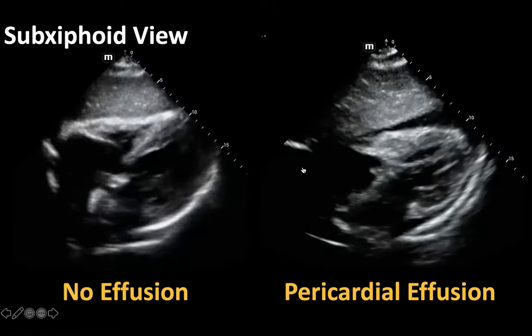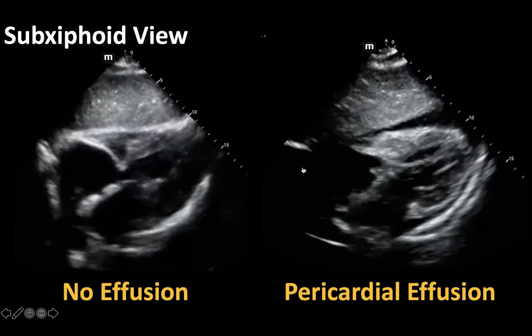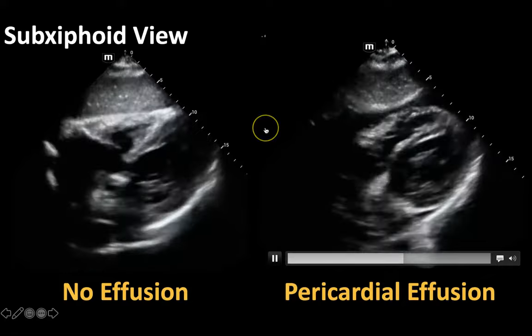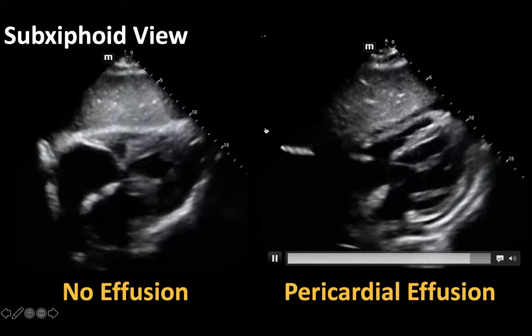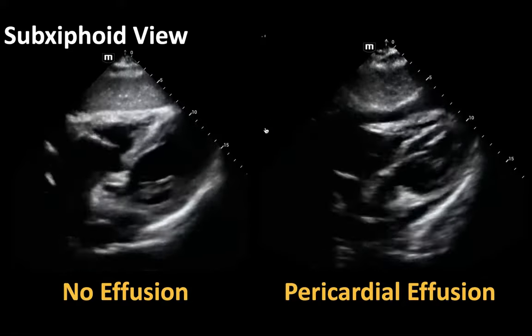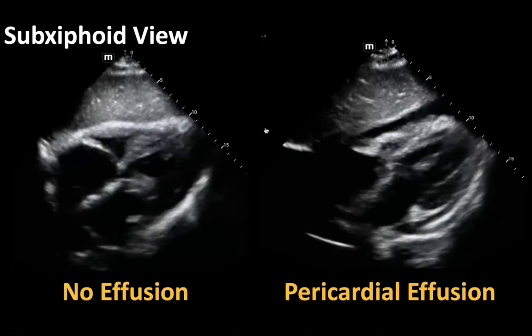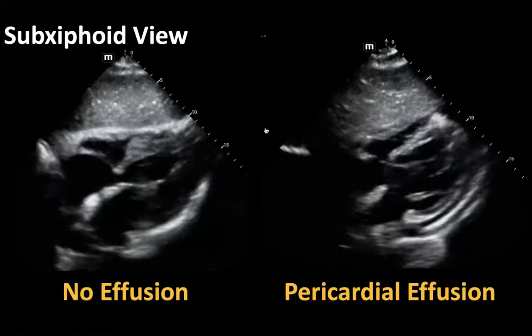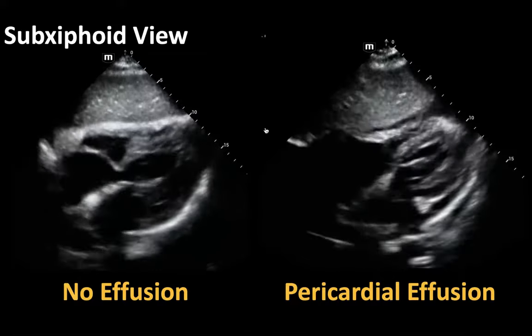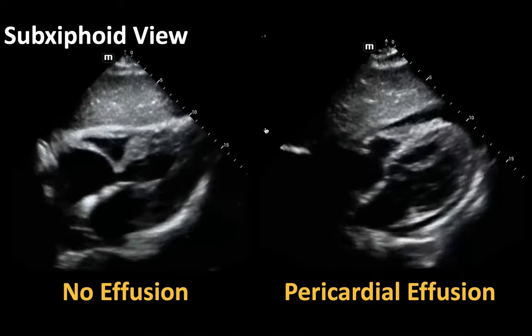The sub-xiphoid view is actually a really nice view to assess for pericardial effusion because the probe is coming into the dependent portion of the heart, so it's actually quite sensitive for looking for effusion. How do we get our sub-xiphoid view?